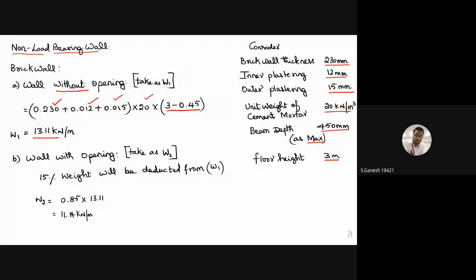For walls with openings such as doors or windows, we deduct 15% from the previous load — this is a thumb rule. So: (100 − 15) / 100 × 13.11 = 0.85 × 13.11 = 11.14 kN/m. This is the wall load where openings are present. Non-load-bearing walls include regular brick walls, while load-bearing walls include shear walls, retaining walls, and basement walls.